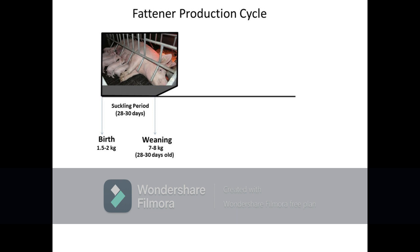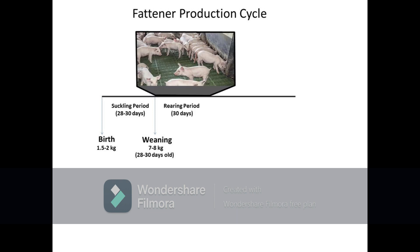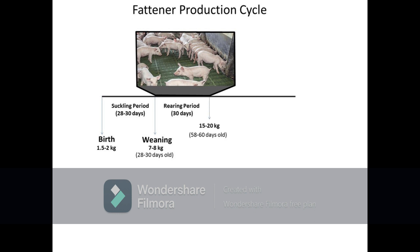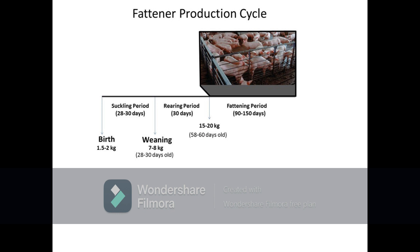From the day of weaning, the piglets undergo the nursery period of about 30 days, or until they reach around 15 to 20 kg live weight each, when they are about 58 to 60 days old. After the nursery period, the pigs undergo the fattening period for about 90 to 150 days, or until they reach the desired market weight of about 80 to 90 kg at the age of 148 to 210 days old.